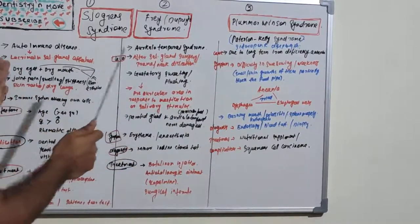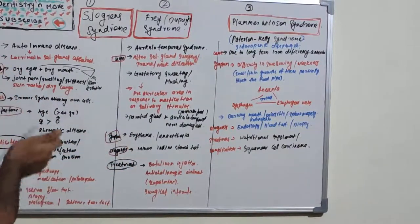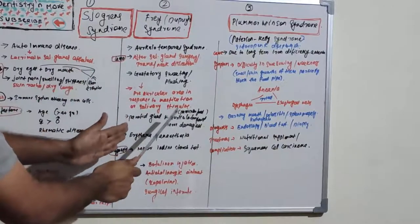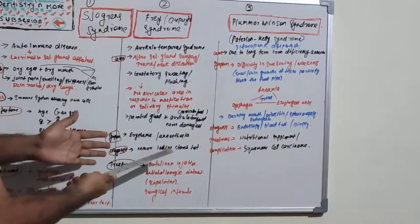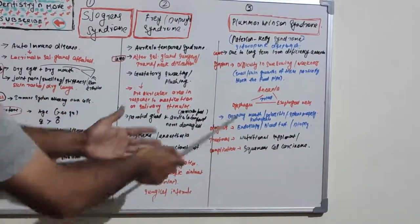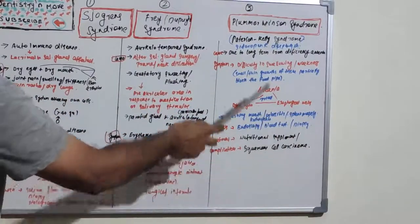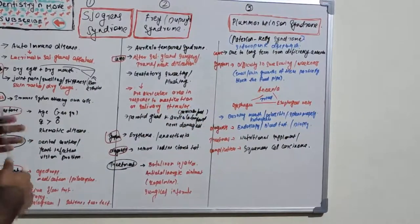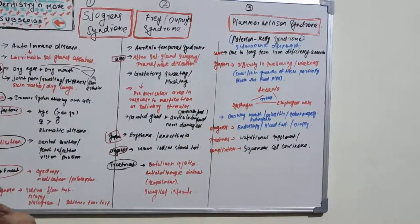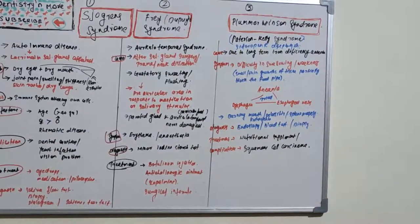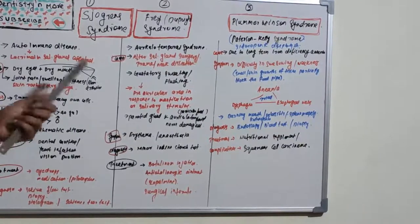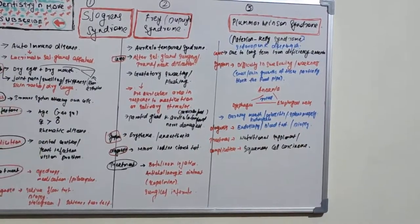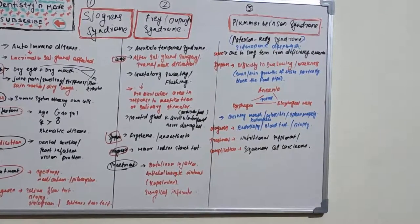In summary: Sjögren's syndrome is an autoimmune disease affecting salivary and lacrimal glands; Frey's syndrome is caused by trauma to the salivary gland and auriculotemporal nerve; and Plummer-Vinson syndrome is a nutritional deficiency disorder. These three are commonly asked exam questions, so understand the differences between them. More syndromes will be covered in coming sessions.